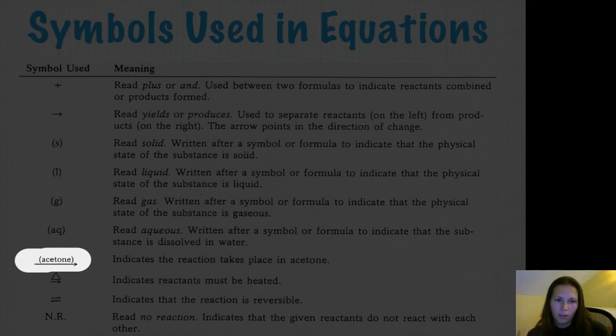A yield arrow with the word acetone above it means that it's taking place in acetone. Rather than just regular water or just reacting the two reactants together. A little triangle, as I said before, indicates that the reaction must be heated, so we need to add flame or heat in some way. The double-sided arrow indicates that the reaction is reversible. So, just because we put A and B together and get C, it actually means that we can get C and go back to A and B if we want to. And NR is no reaction, so it indicates that the two reactants on one side don't react with each other. They don't produce anything in the equation.